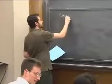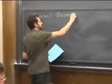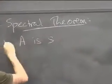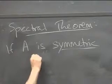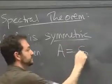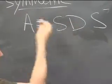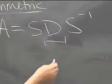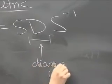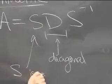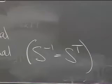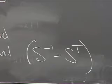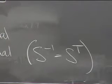The spectral theorem says that if A is symmetric — it has to be square — then A is not only diagonalizable in the standard sense, but S is orthogonal, meaning S inverse equals S transpose. So you can replace that S inverse by S transpose.